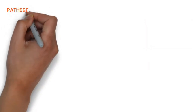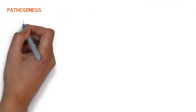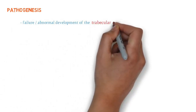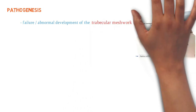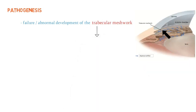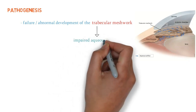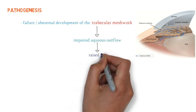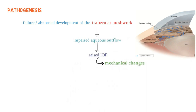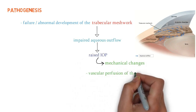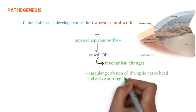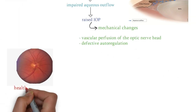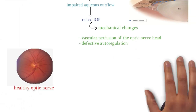The pathogenesis of congenital glaucoma involves failure or abnormal development of the trabecular meshwork. Due to the defect in the trabecular meshwork, there is impaired aqueous outflow, causing a rise in intraocular pressure. This leads to mechanical changes — vascular perfusion of the optic nerve head is compromised and there is defective autoregulation. Here we have a healthy optic nerve compared to the optic nerve in glaucoma.